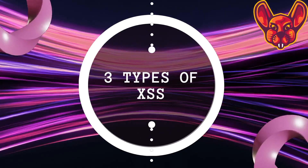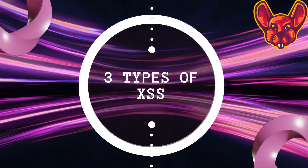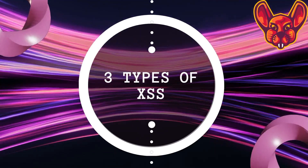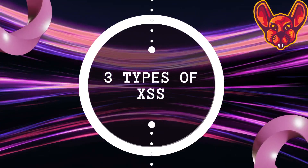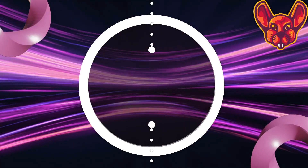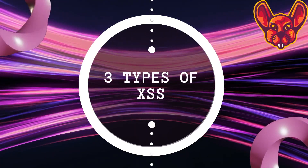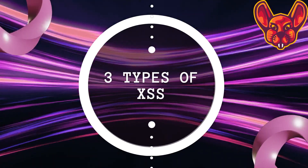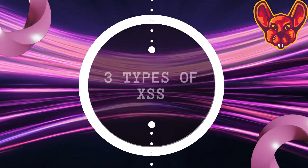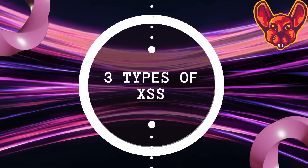When we talk about stored cross-site scripting, this type of XSS occurs when an attacker injects malicious code into a web page that is stored onto the server. Any user who views the page will then be exposed to the injected code. For example, an attacker could post a comment on a forum with malicious code.